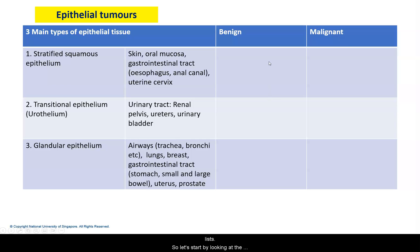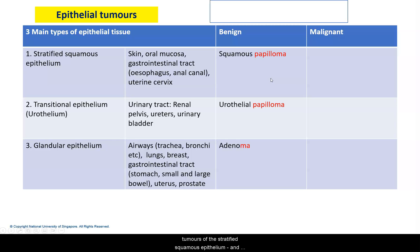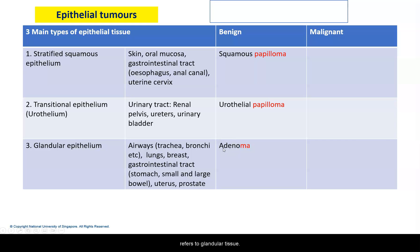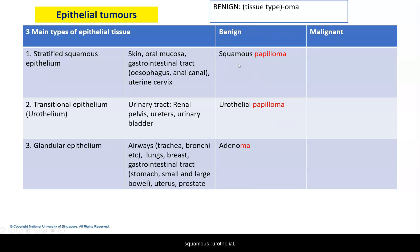Let's start by looking at the names for benign tumours of the stratified squamous epithelium. These are called squamous papillomas. Similarly, benign tumours of the urothelium are called urothelial papilloma. For glandular epithelium, benign tumours are known as adenoma — adeno refers to glandular tissue. Remember, benign tumours will have the tissue type — squamous, urothelial, adeno — followed by -oma.